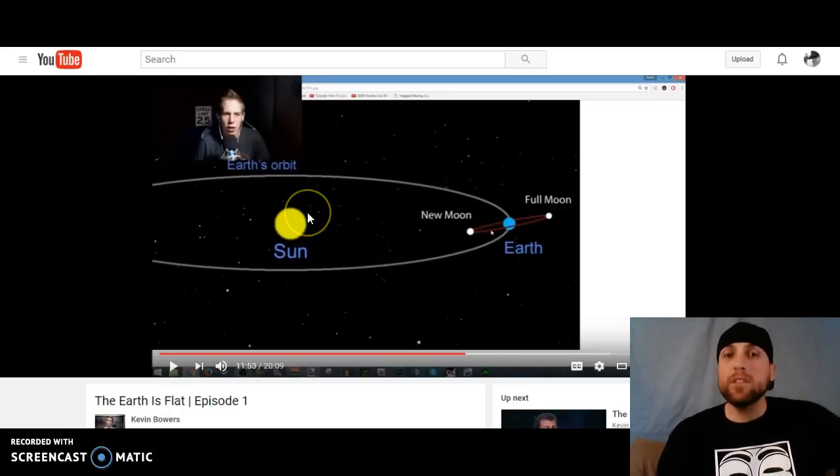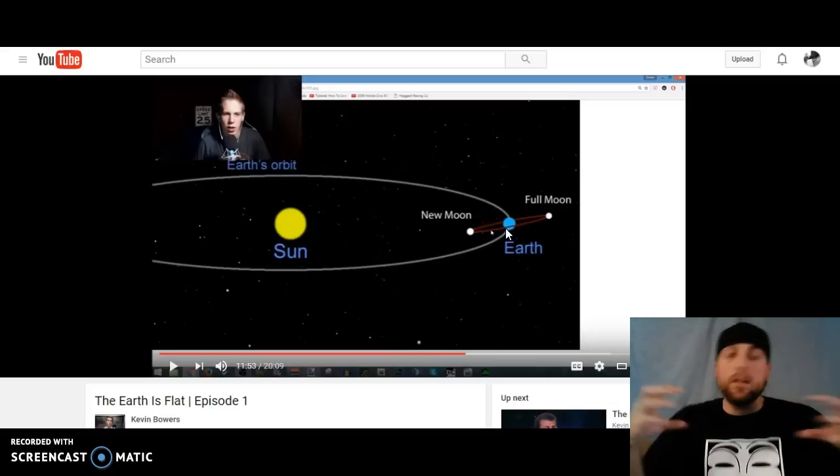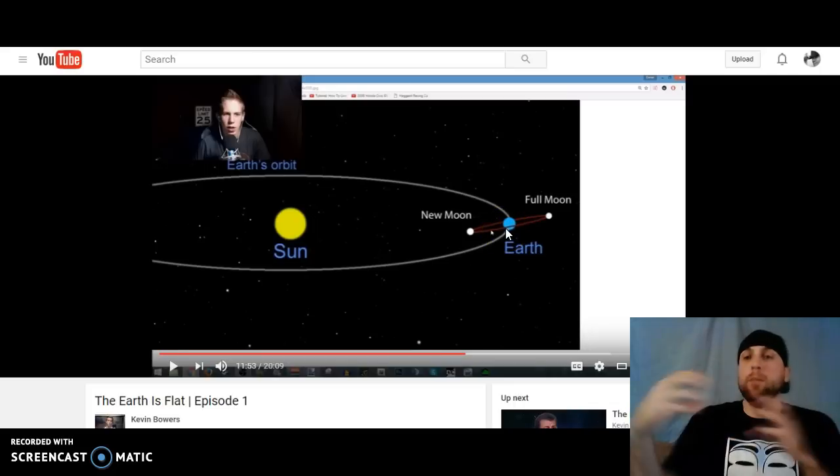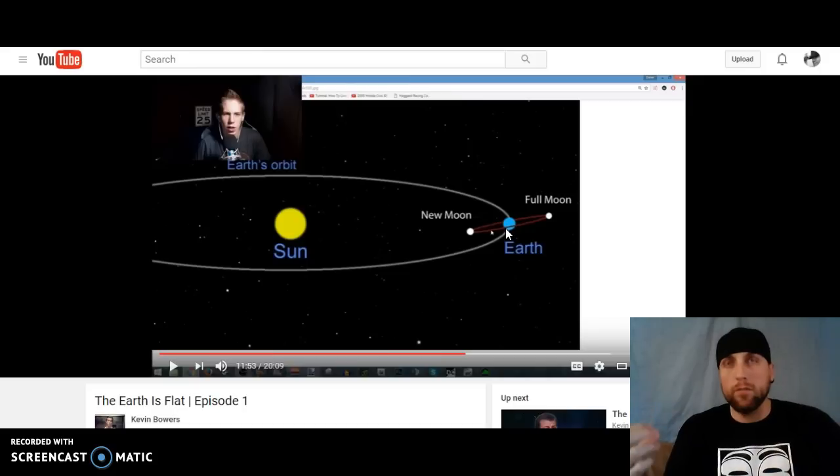All right, let's get right into it. So Kevin was showing this diagram right here, and he was talking about gravity and the gravitational pull that pulls the sun around the moon and pulls the moon around the earth - pulls the earth around the sun, you know what I mean.